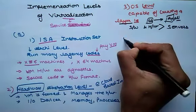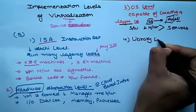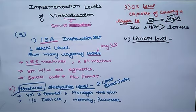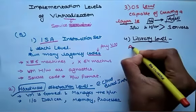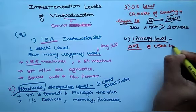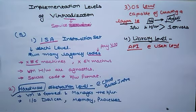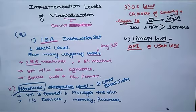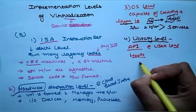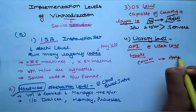The fourth point is Library level. At this level, the operating system is cumbersome, and this is when the application makes use of the API — Application Programming Interface — that forms the libraries at the user level. These APIs are documented well, and this is why the library virtualization level is preferred in these scenarios. API hooks make it possible as it controls the link of communication from an application to the system.